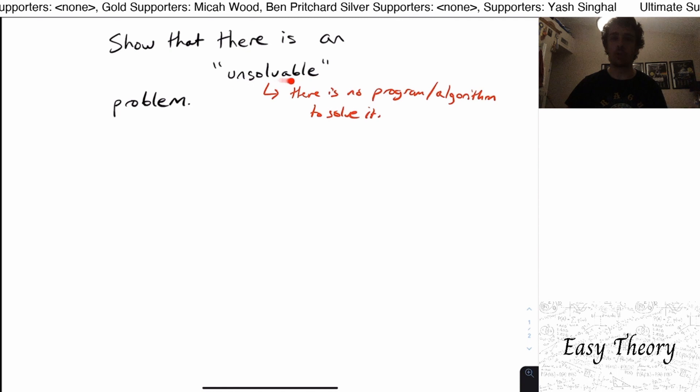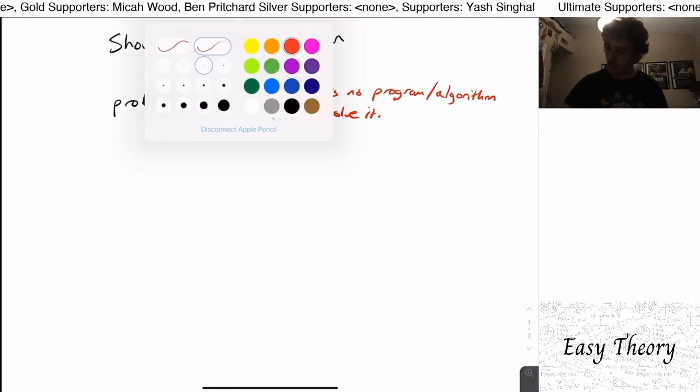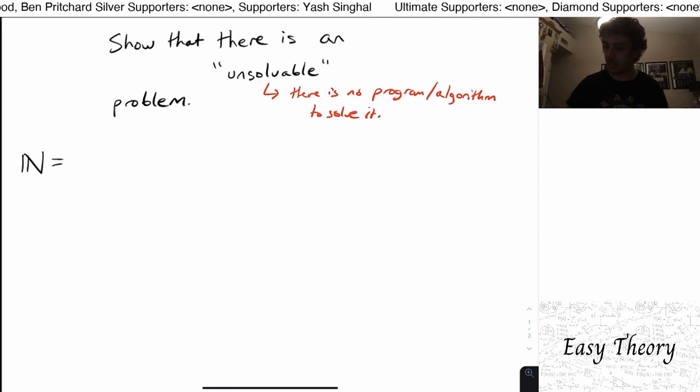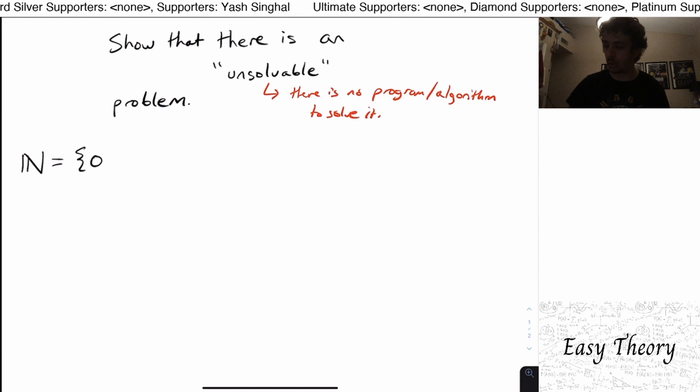So what we would need to do is to show that there is an unsolvable problem. So one thing that we will take for granted is let's consider these two sets. This bold script N thing is the set of all natural numbers. So all the numbers 0, 1,